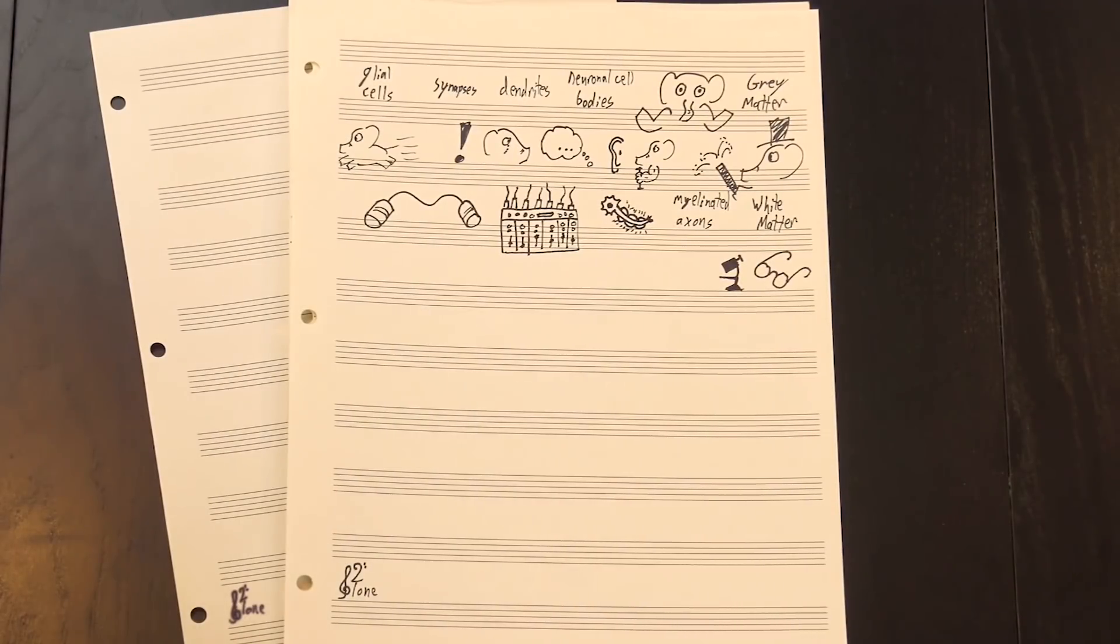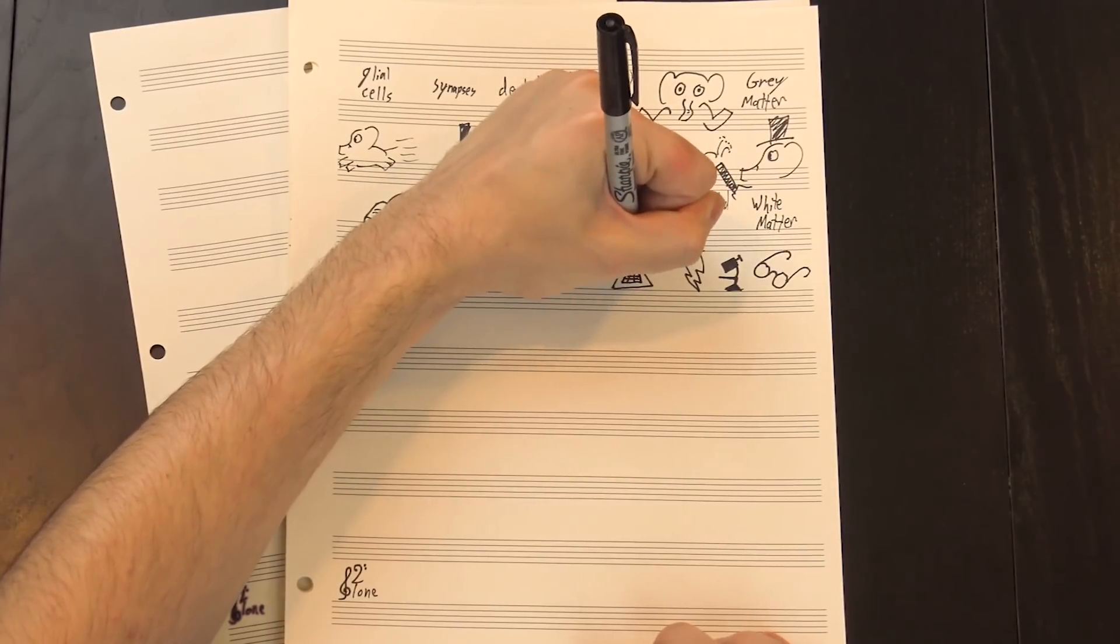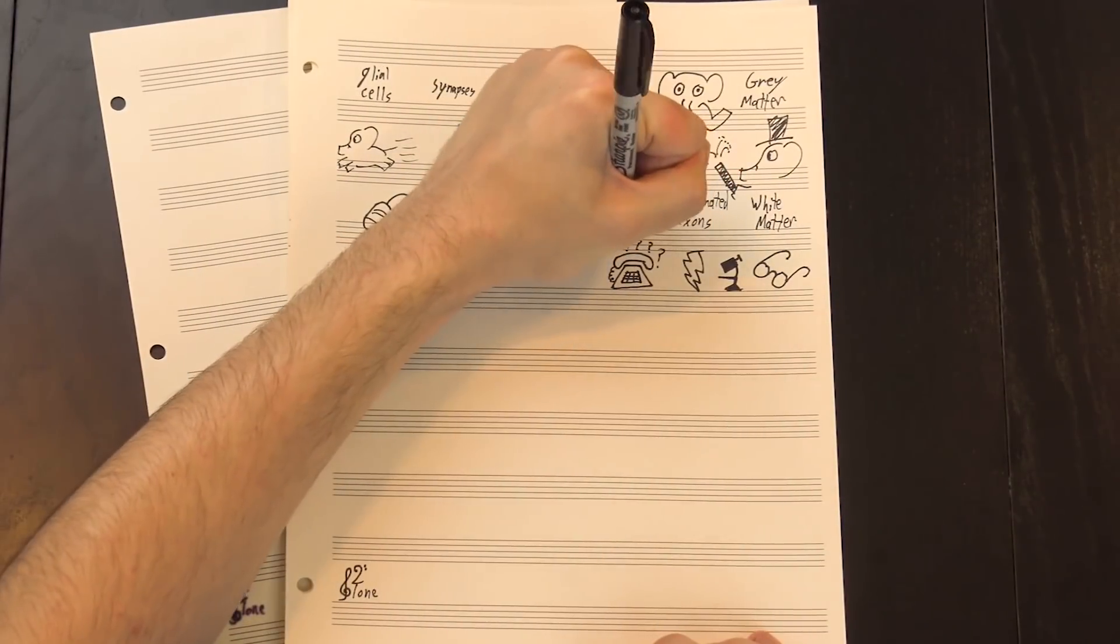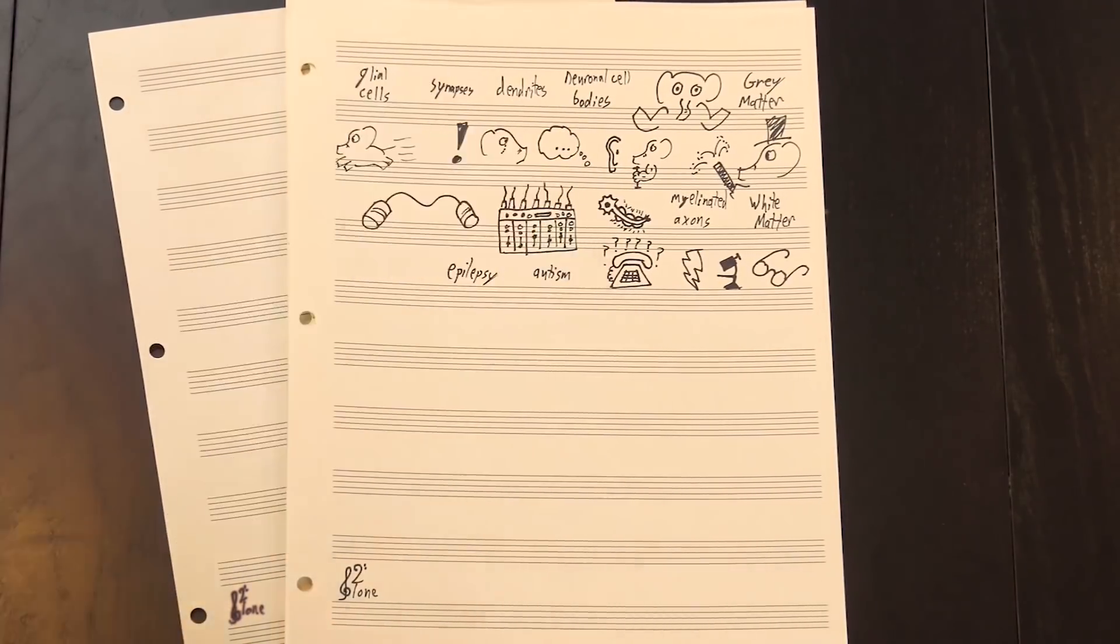For instance, a bunch of research has found changes in the development of synapses in ASD, which could lead to changes in how neurons are communicating with each other and result in neurons not connecting properly. This could also help explain why autism is frequently associated with epilepsy.